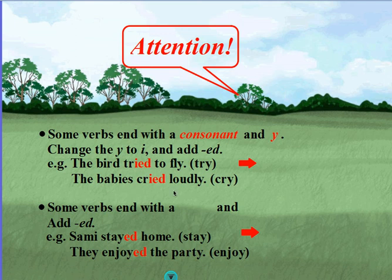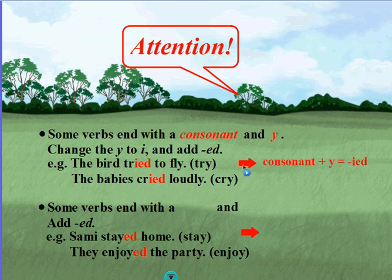The babies cried loudly. The base verb is cry and it ends with a consonant plus the letter y. Again, we changed the y to i and added -ed to show that the action happened in the past. So the general rule is: when you have a consonant plus the letter y at the end of the verb, change the y to i and add -ed.